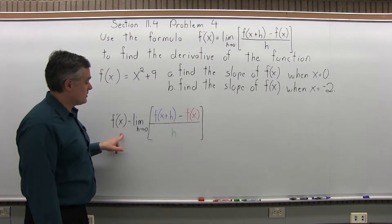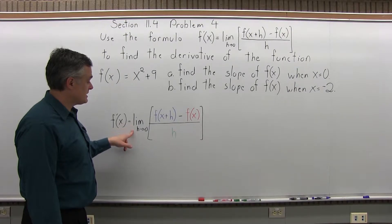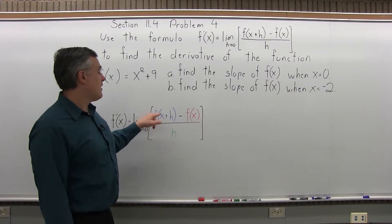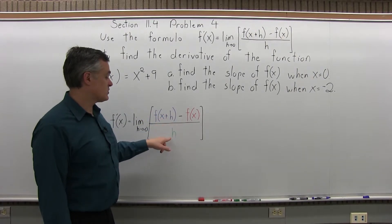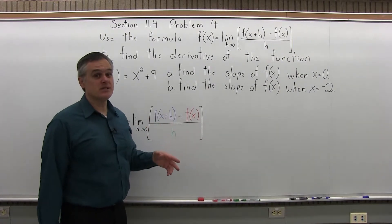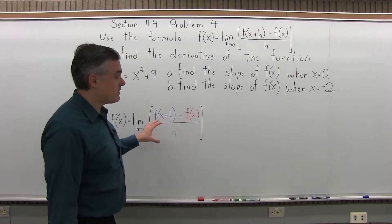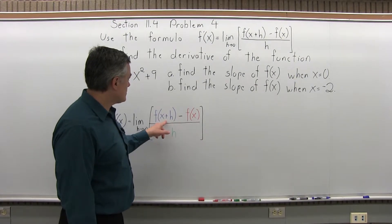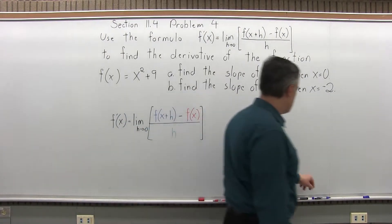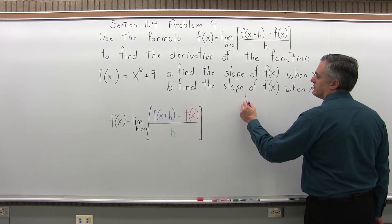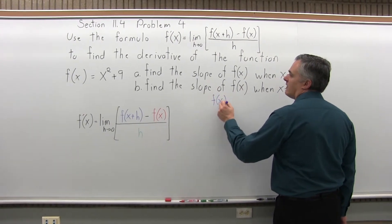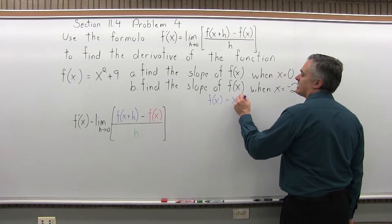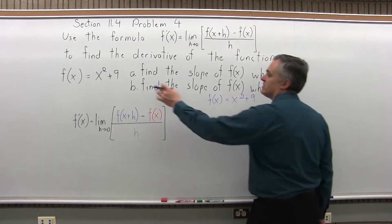So this is the formula that we have to fill in: f'(x) equals the limit as h approaches 0 of f(x+h) minus f(x) over h. I've drawn this in different colors, I consider this formula of 3 parts, so I have the 3 parts in 3 different colors. So let's do the blue first, f(x+h). We have f(x) = x² + 9, that's given in the problem.